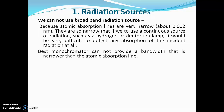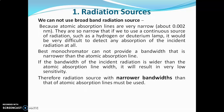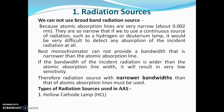A grating monochromator cannot provide bandwidth that is narrower than the atomic absorption line. If the bandwidth of incident radiation is wider than the atomic absorption line width, it will result in very low sensitivity. Due to these reasons, we have to use a radiation source with narrower bandwidth than the atomic absorption lines. Such radiation sources are the hollow cathode lamp and the electrodeless discharge lamp.